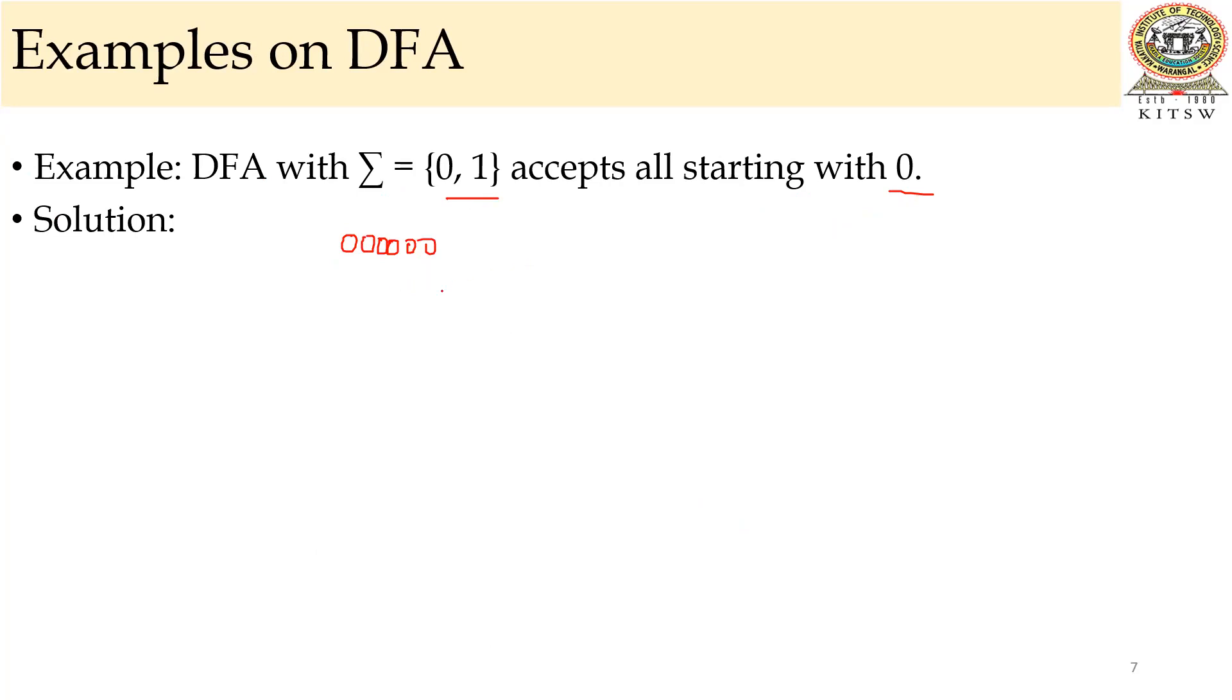Before going to DFA, we have to remember one thing that initial state will be like this. And for one state, if you are giving, there is only one input to enter into the another state. And one more thing is, if we are giving, if you want to travel to other state, there must be only one input. And if you are giving one input, that will tend to only one particular state.